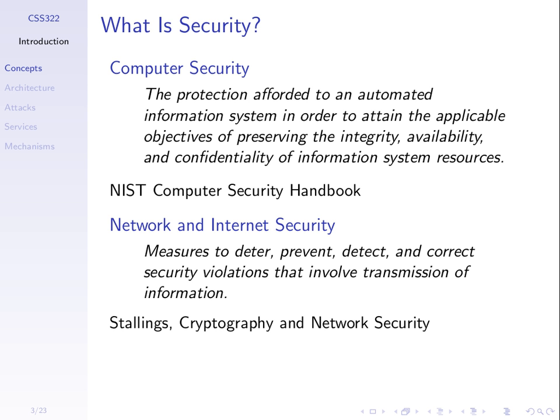Here's another definition, from the textbook by Stallings, about network security: measures to deter, prevent, detect, and correct security violations that involve the transmission of information. Network security is about when we're sending information across some computer network. Computer security is more general — it includes network security, but also the security of the actual computer itself. We can have computer security issues without a network at all.